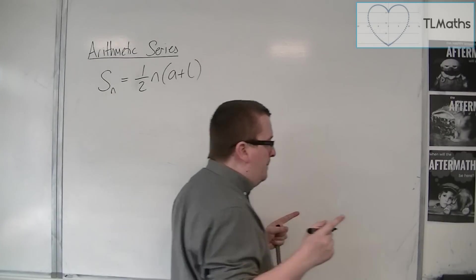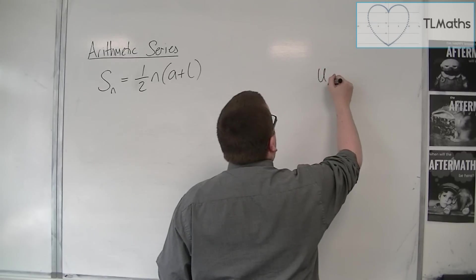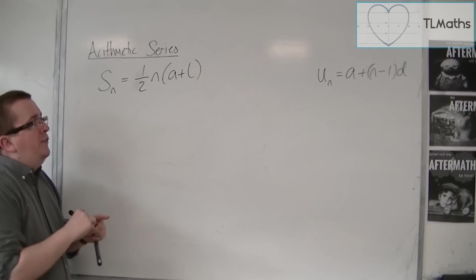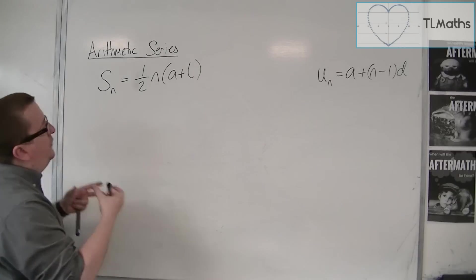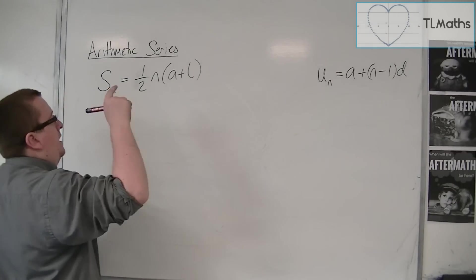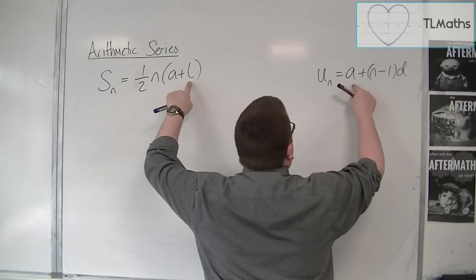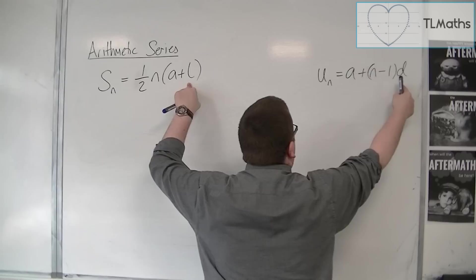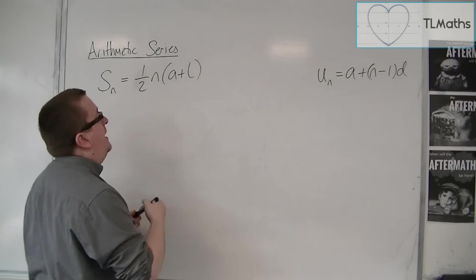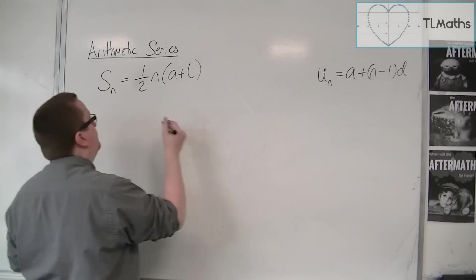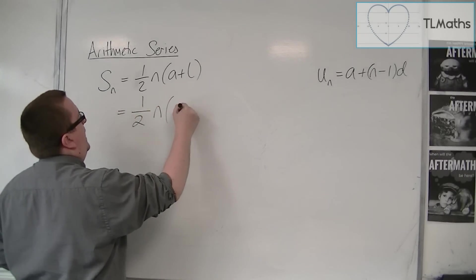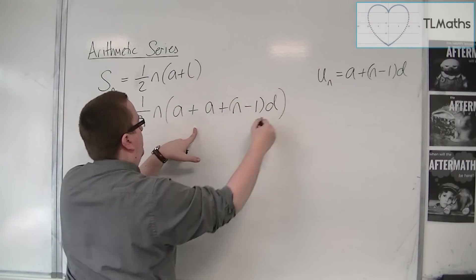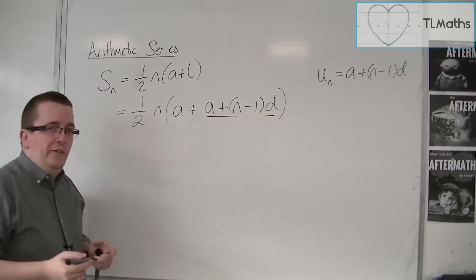We have as a formula already that the nth term is a plus n minus 1 times d. So for a certain n, for that last term, the last term will be given by the first term plus the last entry take away 1 times d. That means I can replace L with a plus n minus 1 times d. That is the last term in the series.